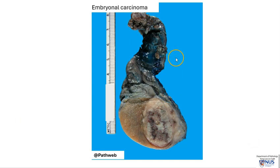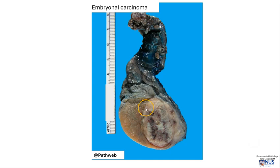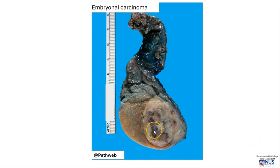Here is another example of embryonal carcinoma. This is the uninvolved testicular parenchyma, this is the region of the tumor, which is a whitish fleshy mass with these dark areas of hemorrhage. And here we have the epididymis.